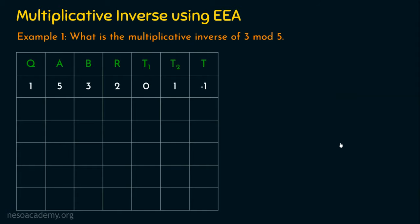Then we perform the shifting operation, just as in Euclid's algorithm. Whatever the value of B is stored in A; whatever the remainder is stored in B. Additionally here, the value of T2 is placed in T1, and the value of T is placed in T2. So now A stores 3, B stores 2, T1 stores 1, and T2 stores −1.